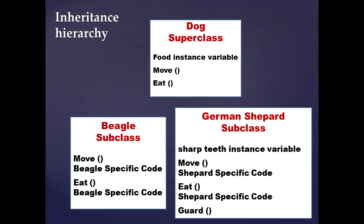That guard method is not one we are inheriting — it becomes unique to that subclass. Similarly, I added a 'sharp teeth' instance variable to the German shepherd. So the shepherd subclass has two overridden methods — move and eat — and one unique method: guard. We can easily add new dogs to our hierarchy, like a poodle. We could also add a sleep method to the dog superclass and all subclasses would inherit it.